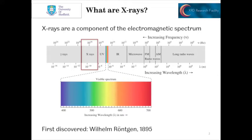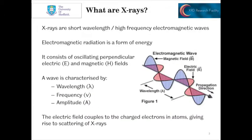X-rays were first discovered by Röntgen in 1895. X-rays are short wavelength, high frequency electromagnetic waves. That means they have both an electric and a magnetic component, which are perpendicular to each other.